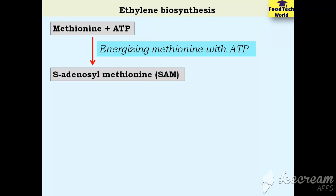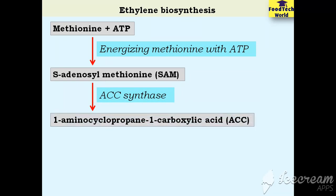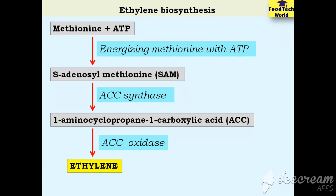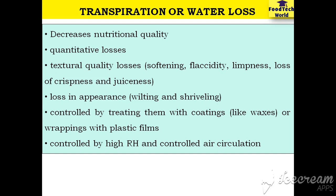Regarding ethylene biosynthesis: first, methionine is energized with ATP to form SAM (S-adenosyl methionine). In the presence of ACC synthase, SAM is converted into ACC (1-aminocyclopropane-1-carboxylic acid). Then, in the presence of ACC oxidase, ACC is oxidized and converted into ethylene. This flow chart is very important from an ARS NET exam point of view.